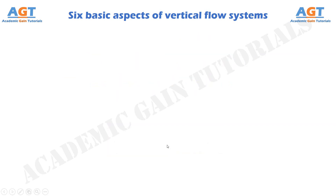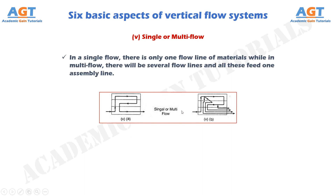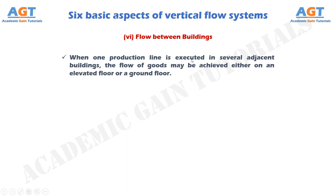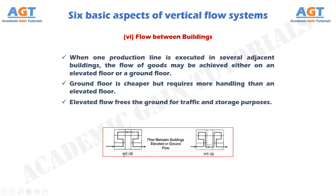Number 5: Single or multi-flow. In a single flow, there is only one flow line of materials, while in multi-flow there will be several flow lines and all these feed one assembly line. In these two figures we can see both single and multiple flows. Number 6: Flow between buildings. When one production line is executed in several adjacent buildings, the flow of goods may be achieved either on an elevated floor or a ground floor. Ground floor is cheaper but requires more handling than an elevated floor. Elevated floor frees the ground for traffic and storage purposes. We can see material flow between buildings using both ground floor and elevated flow in these two figures.